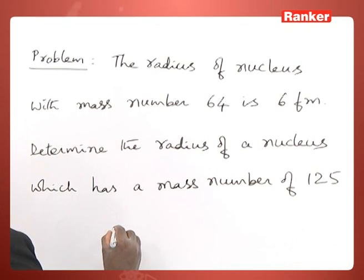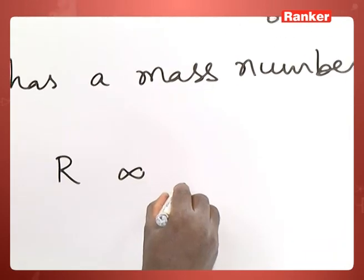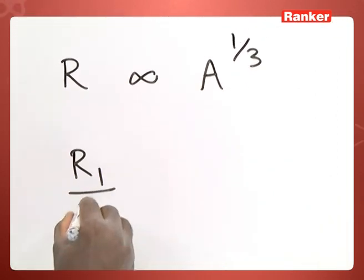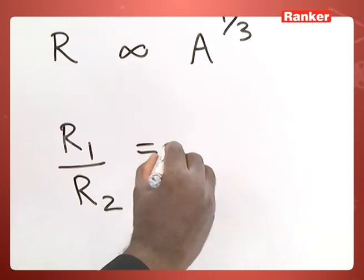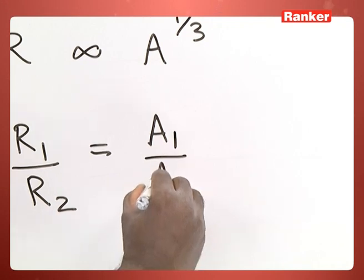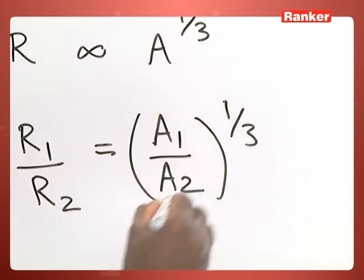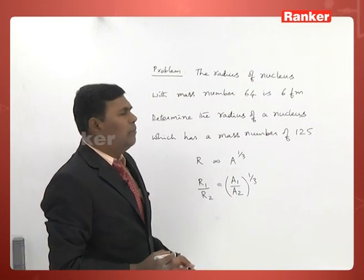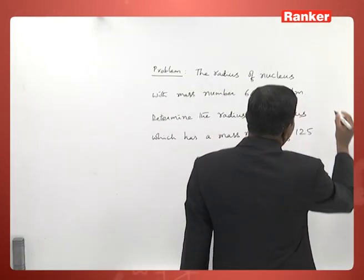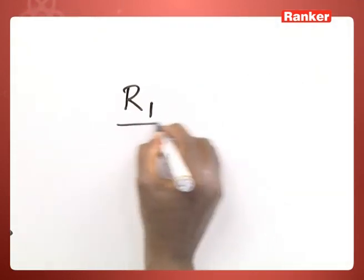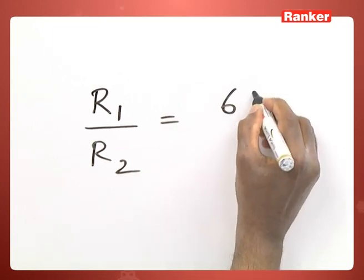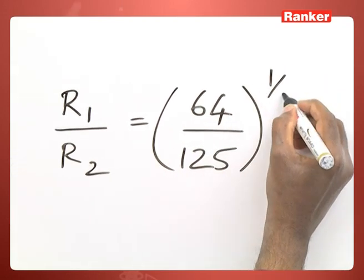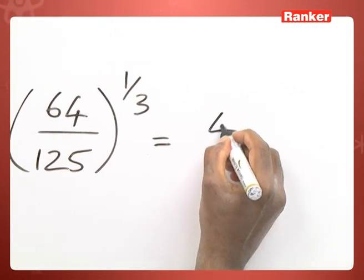We know that the radius of any nucleus is directly proportional to A to the power 1 by 3. If we take the ratio of any two radii of two nuclei, then R1 by R2 will be equal to (A1 by A2) to the power 1 by 3, where R1 and R2 are the radii of two nuclei and A1 and A2 are the respective mass numbers. From that, R1 by R2 can be written as (64 by 125) to the power 1 by 3, which is obviously equal to 4 by 5.